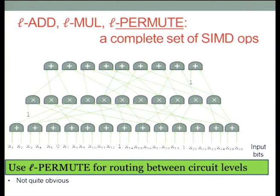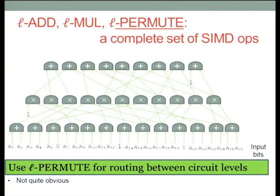Here is our plan for how to compute on encrypted SIMD data. We work in SIMD fashion for each individual level. But then between levels, once we're done with level i and need to go to level i+1, things are not where they need to be. So we use L-permute to route the outputs of level i into the appropriate places in the inputs of level i+1.